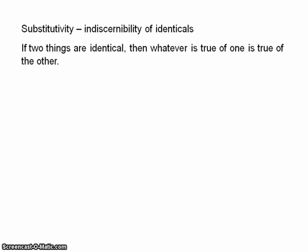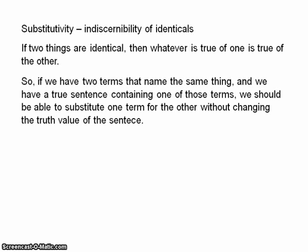So let's think about identity. According to Quine, a fundamental principle of identity is substitutivity, or as he calls it, the indiscernibility of identicals. The idea being that if two things are identical, then they should be indiscernible. The motivation is that if two things are identical, then whatever is true of one of them must be true of the other. If they differed in any respect, then they wouldn't be identical. So if we have two terms that name the same thing and we have a true sentence containing one of those terms, we should be able to substitute one term for the other and the resulting sentence will still be true.